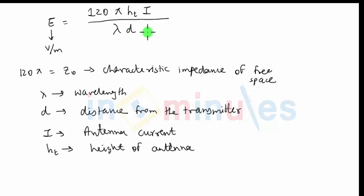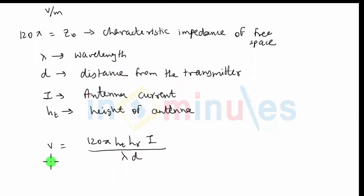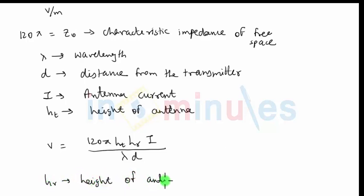If the receiving antenna is placed at this point, the signal received by the antenna in volts is given by: V equal to 120 pi into HT into HR into I divided by lambda d. This formula gives the signal voltage received by the antenna placed at distance d from the transmitting antenna. HR is the effective height of the receiving antenna. The signal received is directly proportional to both HT and HR, which brings us to the important conclusion that the heights of the antennas play a very important role in the transmission of signal through ground wave propagation.